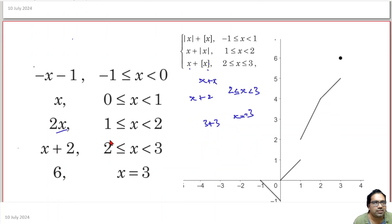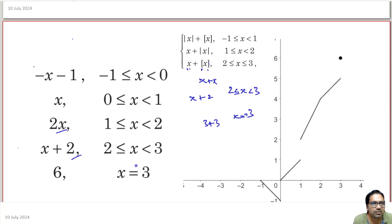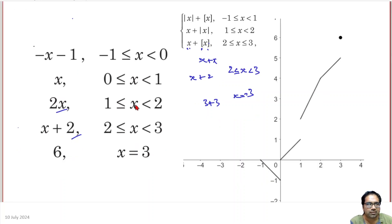So that is the piecewise breakdown: between 2 ≤ x < 3, the function is x plus 2, and when x equals 3, both the x and the greatest integer function give 3, so the value is 6. Now let us draw the graph of all of this. Between minus 1 and 0, the function is minus x minus 1.